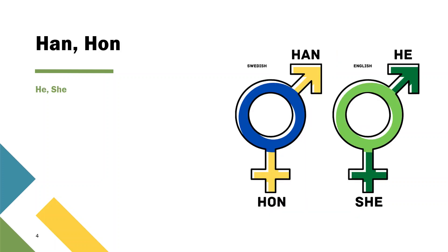Next is third person singular: 'han' and 'hon' — he and she. When I talk to you and I am talking about somebody else, then they are called third person. If it is a male then we say 'han'. If it is a female then we say 'hon'. It is not 'han' or 'hoon' — many Indians have this pronunciation problem. They read it as 'han' or 'hoon', but the correct pronunciation is 'han' for he and 'hon' for she.